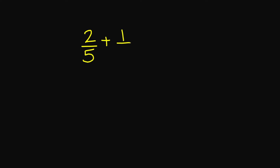What about 2 over 5 plus 1 over 4? In this example, notice my denominators are not the same. So since my denominators are not the same, I need to make them the same. The best way to do this is to find a common denominator. So I'm going to write my 5 here and my 4 here and we're going to look for a common denominator.